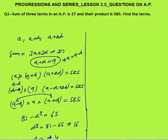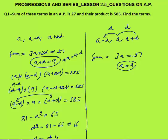Now for a better method: whenever you need to take three numbers in AP, you can take them as a−d, a, a+d. This satisfies the AP condition since the common difference is d throughout. The advantage is that their sum is directly 3a, with all d terms cancelling. Setting 3a = 27 gives a = 9 immediately.